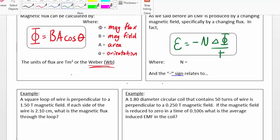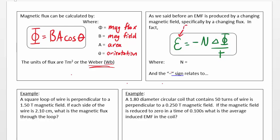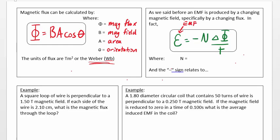Where, of course, E is our EMF. N is the number of loops. Delta phi is our change in flux, as noted. And then little t here, of course, is time.